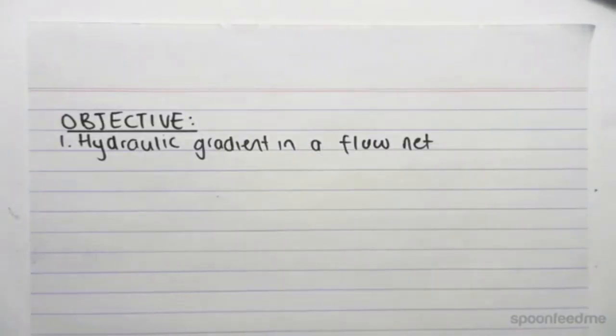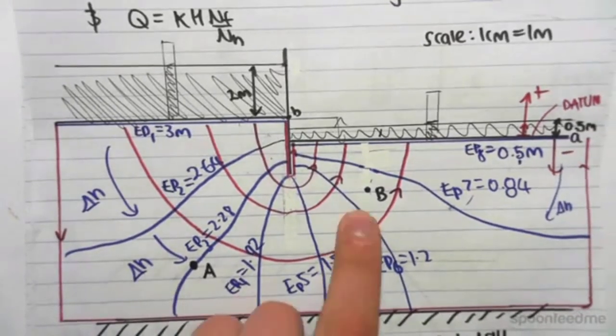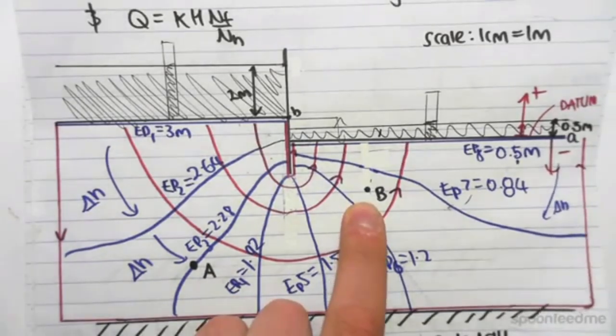Hey guys, the objective for this video is to find the hydraulic gradient in our flow net. So once again, here's our flow net, and we're going to be finding the hydraulic gradient at point B.